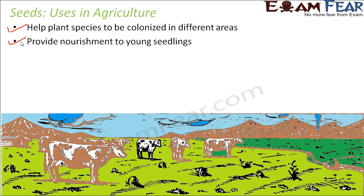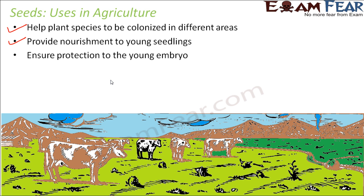Seeds also provide nourishment to young seedlings. The seed contains the embryo as well as the cotyledons, and the cotyledons contain food and help in food storage. This enables the seed to provide nourishment to the seedlings, without which they would not be able to grow into a new plant. Seeds also ensure protection to the new embryo, as the thick seed coat keeps the embryo well protected.